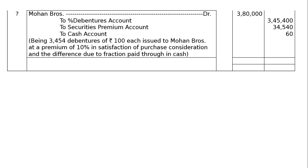The next entry: Mohan Brothers account debited Rs. 3,80,000 — to percentage debentures account Rs. 3,45,400 (3,454 × 100), to securities premium reserve account Rs. 34,540 (3,454 × 10), and the fraction difference paid in cash — to cash account Rs. 60.